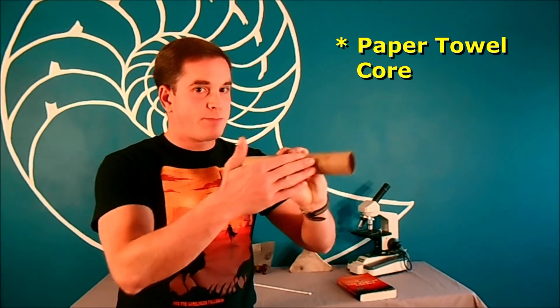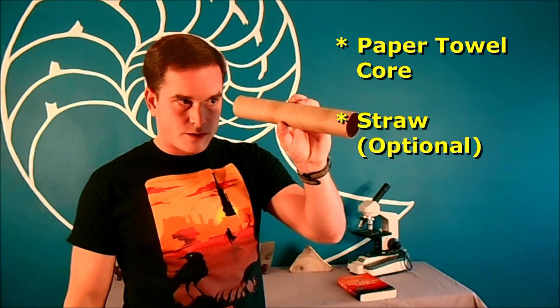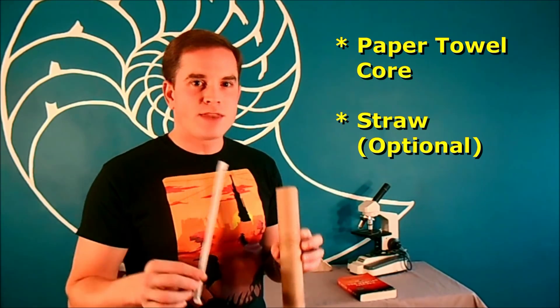Then you need at least a core from like a paper towel roll. One of these tubes should work, but it's better to have it longer, so go with paper towel, not so much the toilet paper. And then something else optional that I'm going to add is instead of just using the paper towel tube, I'm also going to use a straw. That way I can compare the accuracy of the two. I have a feeling we're going to be more accurate if we've got the straw as well. You don't have to use it, but come on, it's a straw.